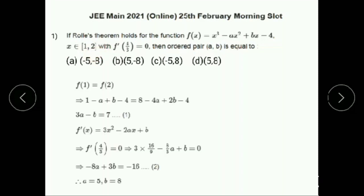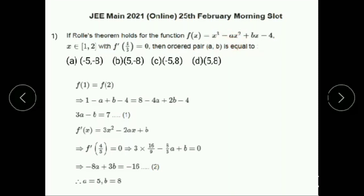Therefore, f(1) = 1³ - a + b - 4, which equals f(2) = 2³ - 4a + 2b - 4, that is 8 - 4a + 2b - 4. From this we get the expression 3a - b = 7. This is equation 1.